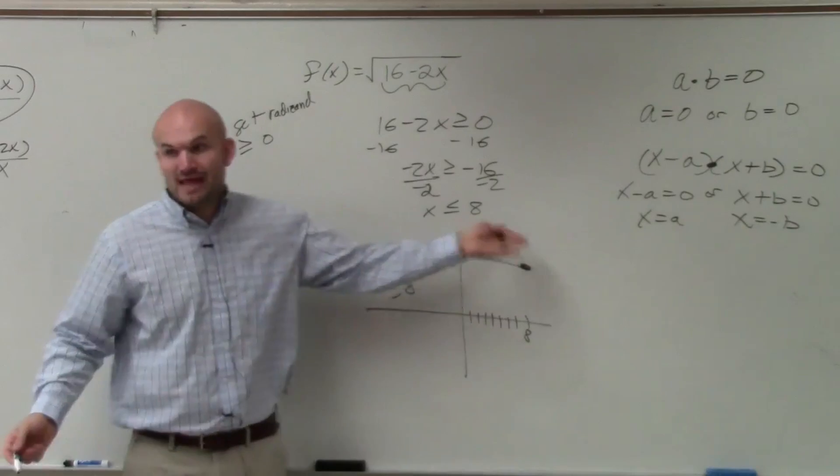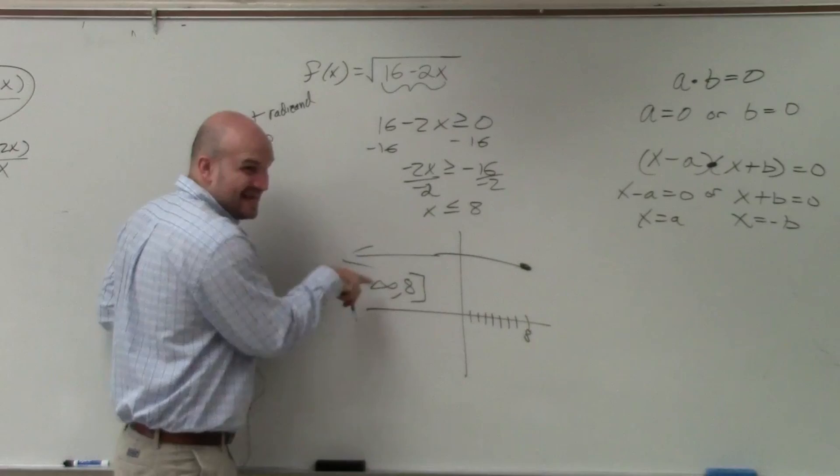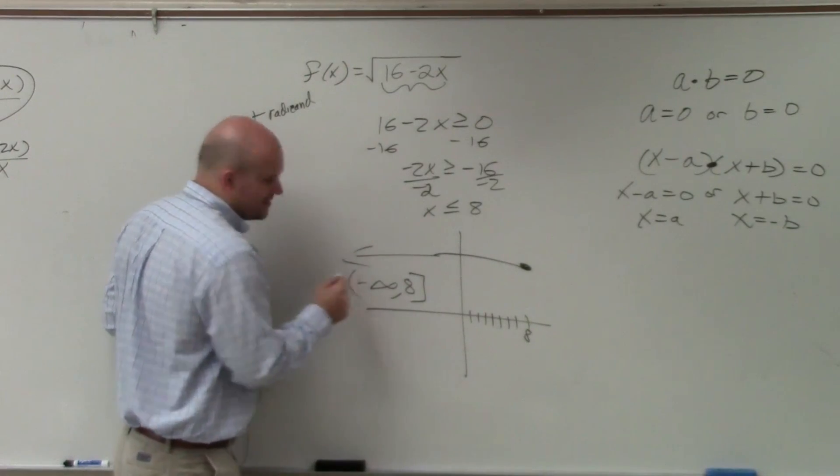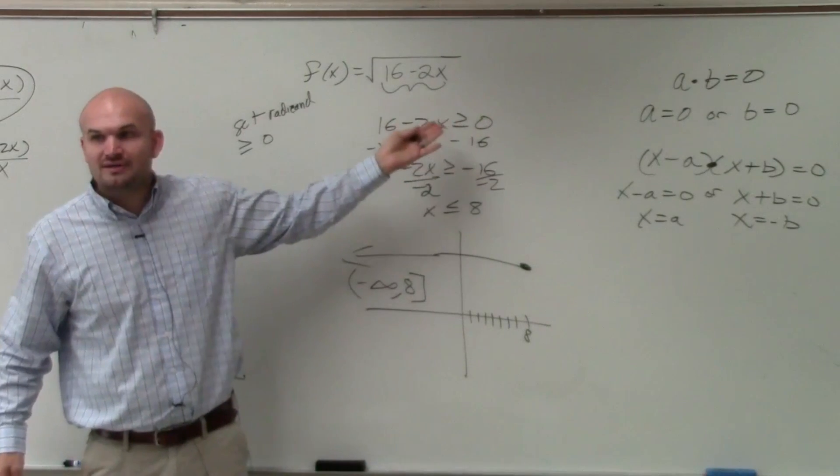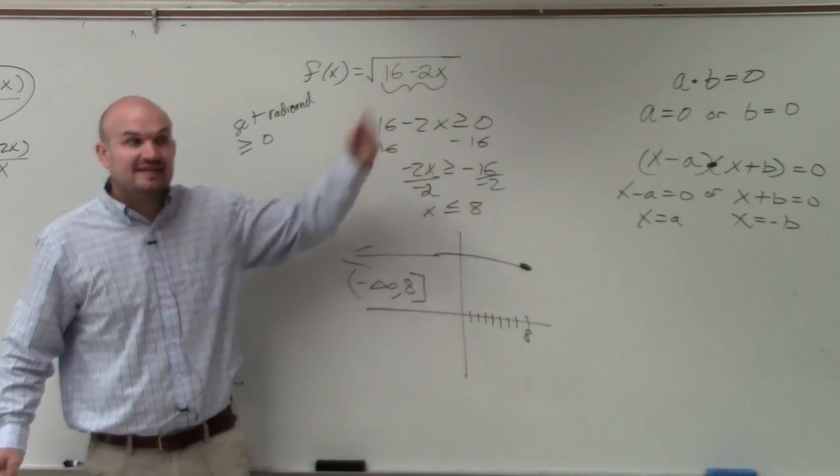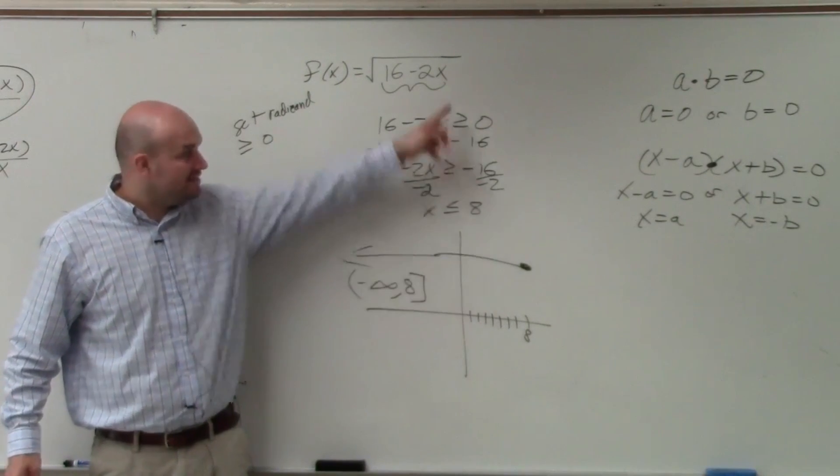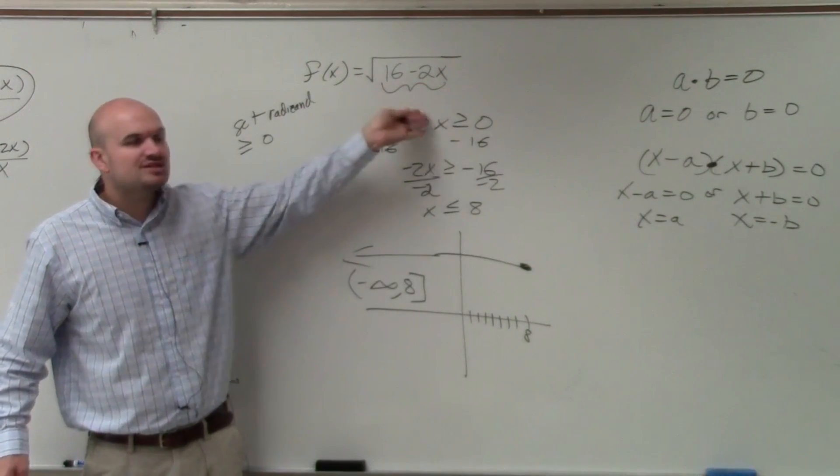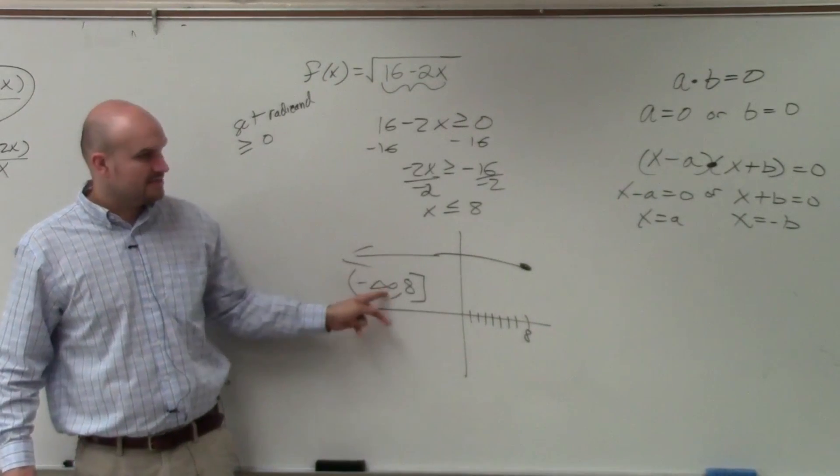So, the domain is really from negative infinity to how far to the right? To 8. Now, can it equal 8, though? Yes. Since it can equal 8, we use a bracket. It can't equal negative infinity, so that's still a parenthesis. Remember in that last example, it couldn't equal negative 3 7ths. Because if it equaled negative 3 7ths, that made the denominator equal to 0. It can equal 8. You can have a square root of 0, we just can't have it negative. So, that's your domain for that one.